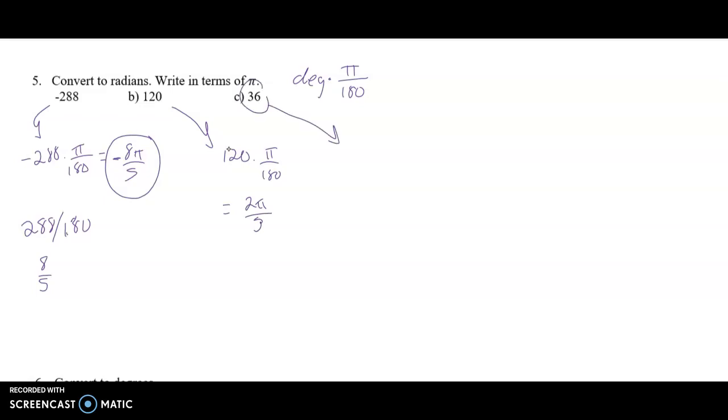For the 36, you're going to take 36 and multiply it by pi over 180. Same thing. Type 36 over 180 into your calculator. Do a simplification with the math frack or simplify it by hand, and you get pi over 5. So those are our three answers.